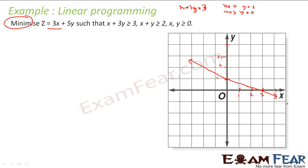So this line is x plus 3y is equal to 3. Let's find which area satisfies the constraint. If we put 0, 0: 0 plus 0 is not greater than 3, so that means this area does not satisfy the inequality. So I am looking for the region on the other side. This is done.